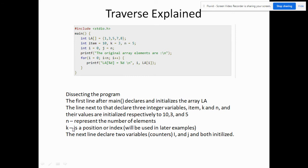k is a position or index, and we'll be using this in later examples. The next line declares two variables, which are actually used as counters. We have the variable i and j, and both were initialized with their values. So i equal to zero and j equal to n.